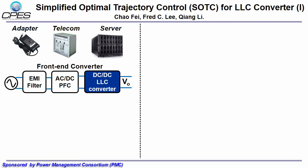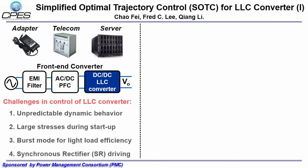Front-end converters are used in the IT industry such as adapters, telecom, and servers. An LLC converter is widely used as a DC-DC stage in front-end converters due to its high efficiency and high power density. However, since the control characteristics of the resonant tank are quite complex, there are four challenges in the control of an LLC converter: unpredictable dynamic behavior, large stresses during startup, burst mode for light-load efficiency, and synchronous rectifier driving.